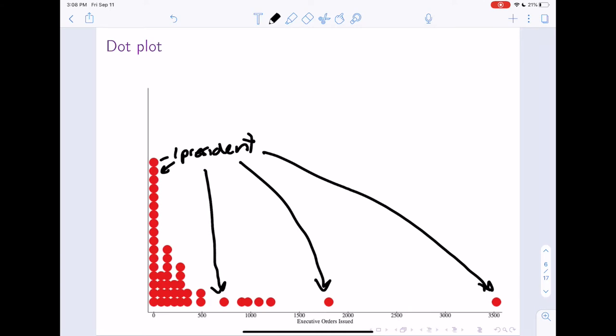So a dot plot is kind of like a histogram, which you've probably learned about. And it basically just tells us the frequency of this number of executive orders that have been issued. So if we look at this, what do we think that this looks like?